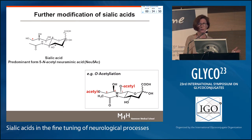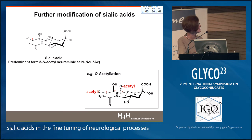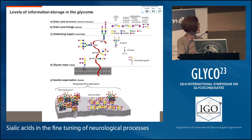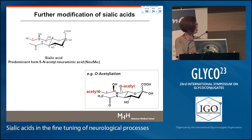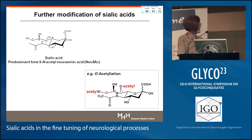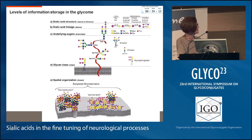On top of all this complexity, we have modifications on the sialic acid core itself. One of the most common modifications is O-acetylation, which can occur at position 7 or at position 9. What this O-acetylation does to the sugar will be explained a little later.